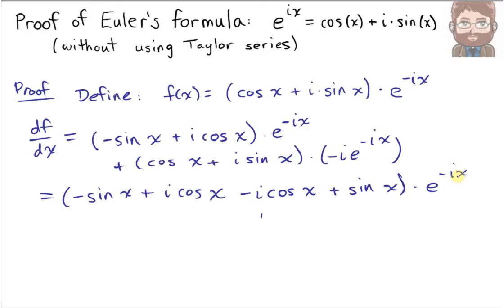Notice that we have great cancellation here. The sine x cancels with negative sine x, the negative i cosine x cancels with i cosine x, leaving us with zero.